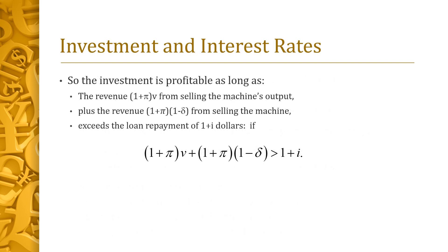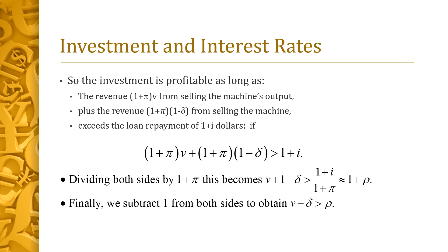The investment is profitable as long as the revenue from selling the output, 1 plus pi times v, plus the revenue from selling the machine, 1 plus pi times 1 minus delta, exceeds the loan repayment of 1 plus i. Dividing both sides by 1 plus pi, the condition holds as long as v plus 1 minus delta exceeds 1 plus i divided by 1 plus pi, which is approximately 1 plus rho. Subtracting 1 from both sides gives the final condition: the firm does the project as long as v minus delta exceeds rho.